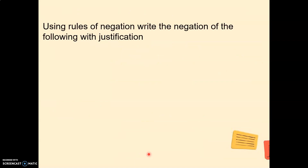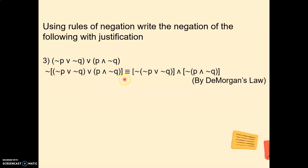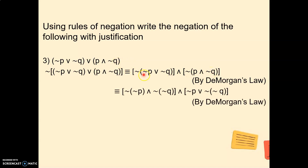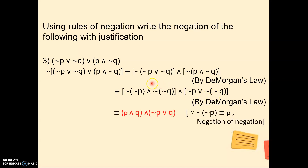Using rules of negation, write the negation of the given statement with justification. First write the negation of the full statement, then treat the two parts and apply De Morgan's law. Apply De Morgan's law again to the inner parts, giving ¬¬P and ¬¬Q terms. Applying double negation, ¬¬P = P and ¬¬Q = Q, giving the final simplified answer. We stop here because the symbols inside the brackets are different.